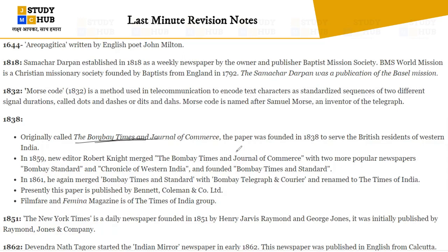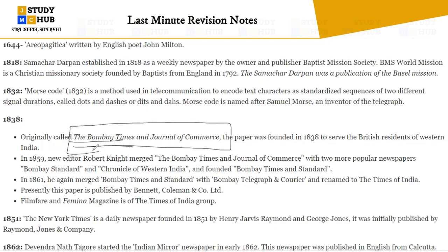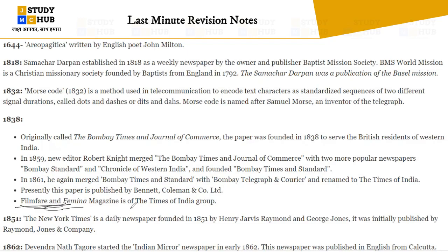The journey of the Bombay Times: in 1859 it merged with Bombay Standard and Chronicle of Western India, and in 1861 it was merged again with the Bombay Telegraph and Courier and renamed the Times of India. The first newspaper's name before the Times of India was the Bombay Times and Journal of Commerce, founded in 1838. Today it is known as part of the Times of India group.